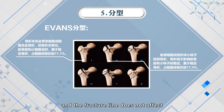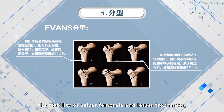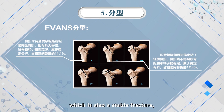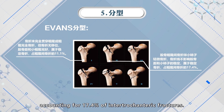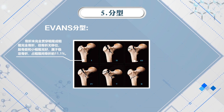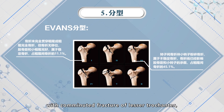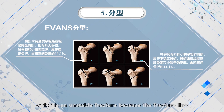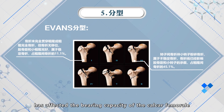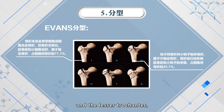Type 2 is the femoral intertrochanteric fracture with minor fracture of the lesser trochanter, which is an unstable fracture because the fracture line has affected the bearing capacity of the causal femoral and the lesser trochanter. This type accounts for 45.1 percent of intertrochanteric fractures.